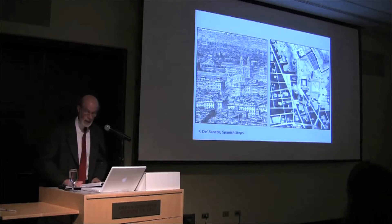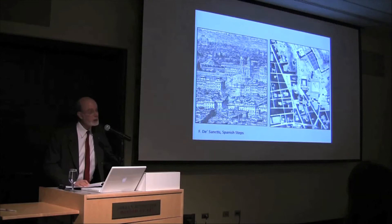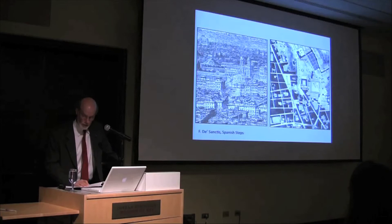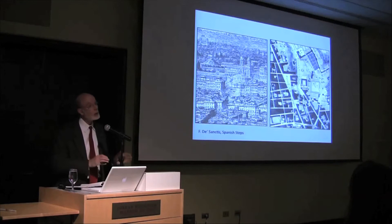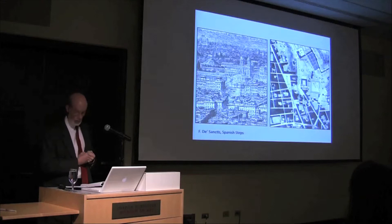Since the 17th century, the embassy of the Spanish crown had fronted on the piazza at the bottom of the hill, giving it the name Piazza di Spagna. The Church of the Trinità dei Monti at the top of the hill belonged to the French religious order of the Minims and had been associated with the French crown since the early 16th century. During the 17th and 18th centuries, as these two Catholic powers vied with one another for the dominance of Europe, the hillside became a hotly contested space.